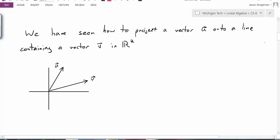We've seen so far how to project a vector u onto a line containing the vector v in R2. We just calculate the projection vector, which we call u hat, and sometimes we write it as the projection of u onto the vector v. We calculate that by taking u dot v divided by v dot v, whatever this number is, times our vector v. That's how we calculate this projection vector.